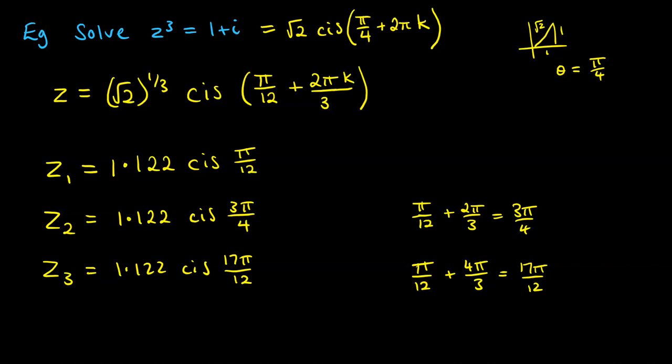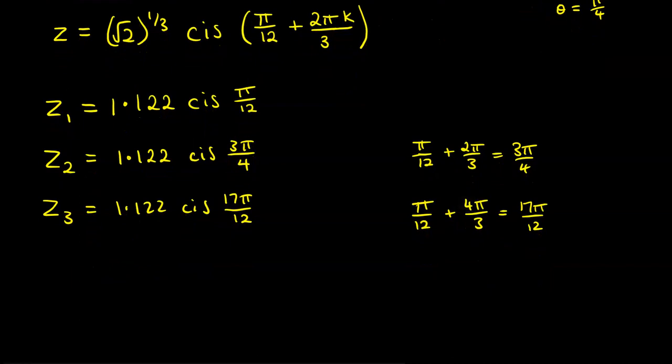Now just one last little thing to finish this off. That last solution there, we've got 17π/12, which goes over π. It's a top-heavy fraction. Now we've seen how to deal with that before, because we talk about things being in the principal argument zone. So if we've gone over π, like this, and we've got 17/12 of π, then we need to actually give the negative underneath instead that would be equivalent.